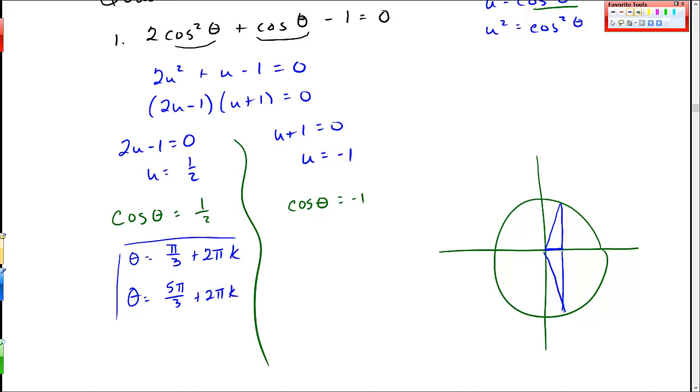Cosine is negative 1, that happens right over here at this point. So I get theta equals pi plus 2 pi k. So those are my three solutions to the problem using quadratic in form.